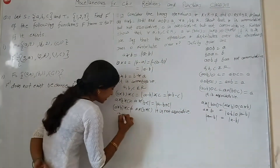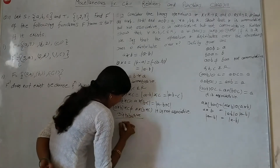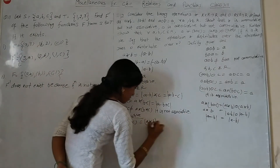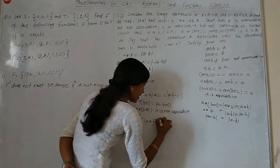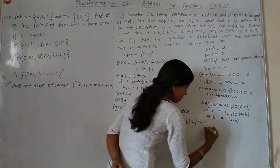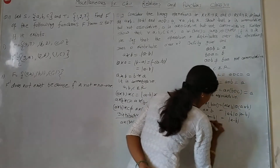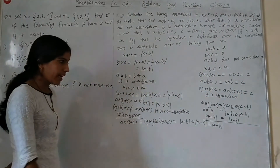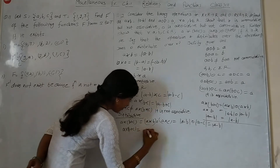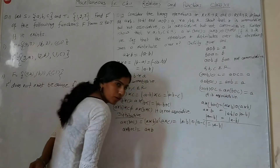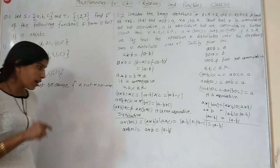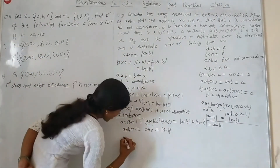For distributivity, take A star outside. We can write A star (B O C) as (A star B) O (A star C). A star B gives A minus B, and A star C gives A minus B. Taking the first element from O, we get A minus B. So A star (B O C) equals (A star B) O (A star C), which means star distributes over O.